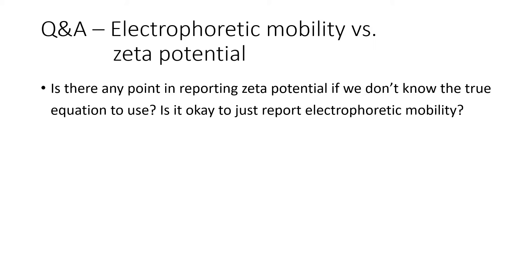I can't recall a single instance of when I needed an absolute value for zeta potential, except for checking against a standard. Just about everything I've done has been relative — relative to something: a specification limit, an initial time point, and so on. And if I'm normalizing the data against something, or comparing limits generated with the same method, then it's unnecessary to calculate zeta. Just stick with electrophoretic mobility.